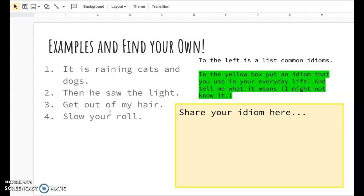So it's raining cats and dogs. He saw the light. Get out of my hair. Slow your roll. So stuff like that are all idioms. So they're phrases that we use that do not necessarily mean what they say.